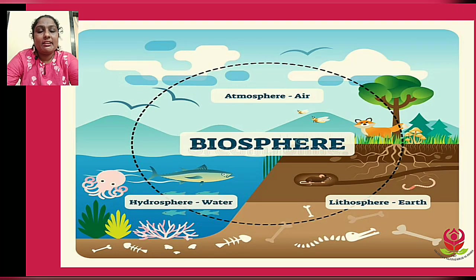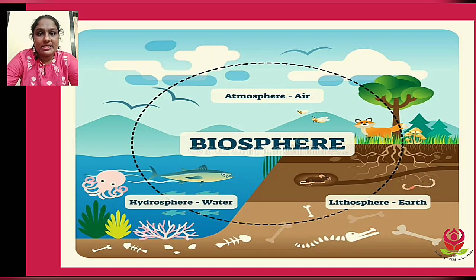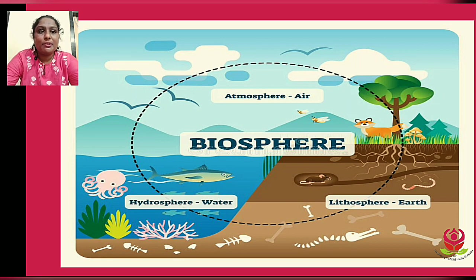The atmosphere is the layer of air that surrounds the earth. The hydrosphere refers to water, the lithosphere is the layer of land and the hard crust beneath it. The living things and the parts of the atmosphere, hydrosphere, and lithosphere together are called the biosphere.